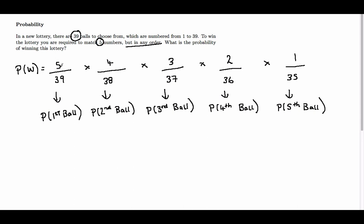So the probability of winning is 5 over 39 times 4 over 38 times 3 over 37 times 2 over 36 times 1 over 35. So we see that the probability of winning is 120 over 69,090,840, which is approximately 0.0000174.